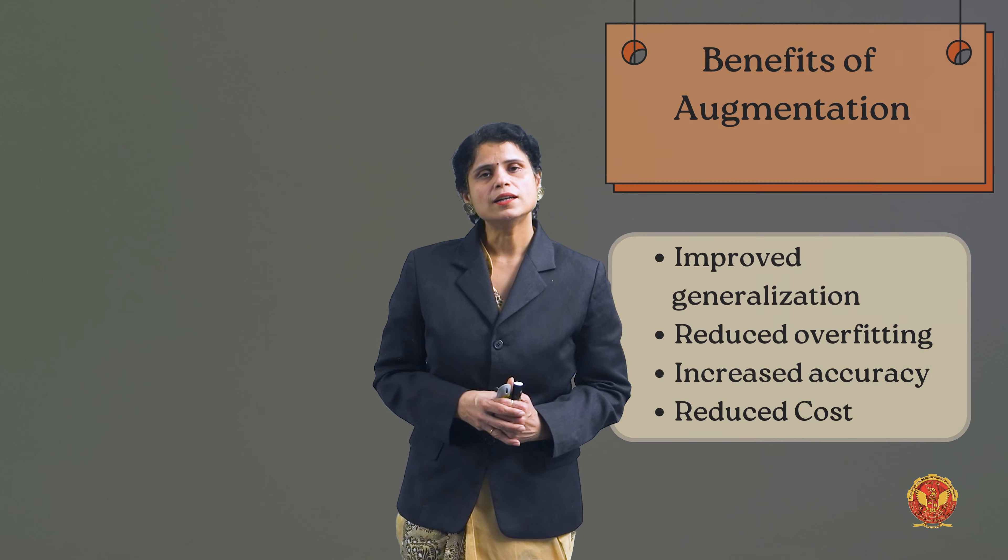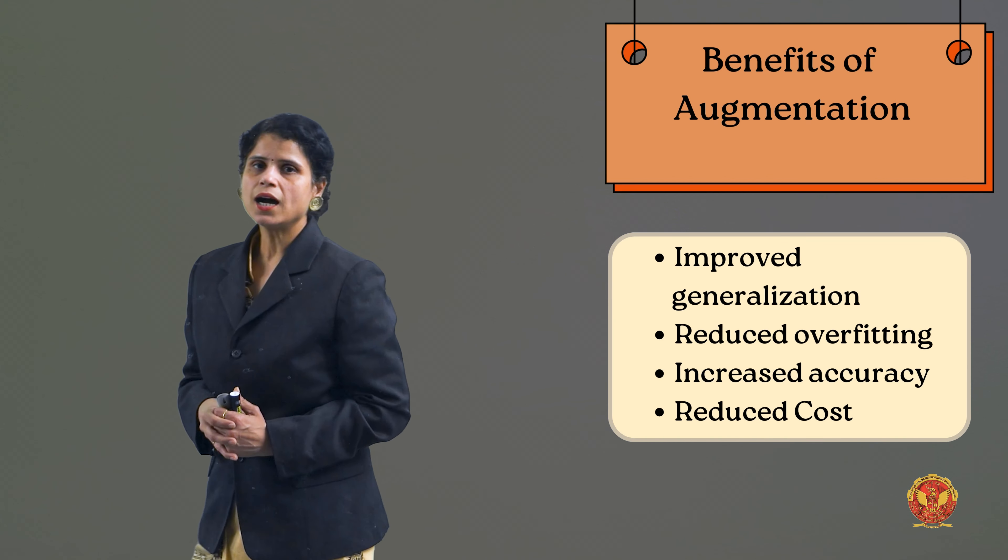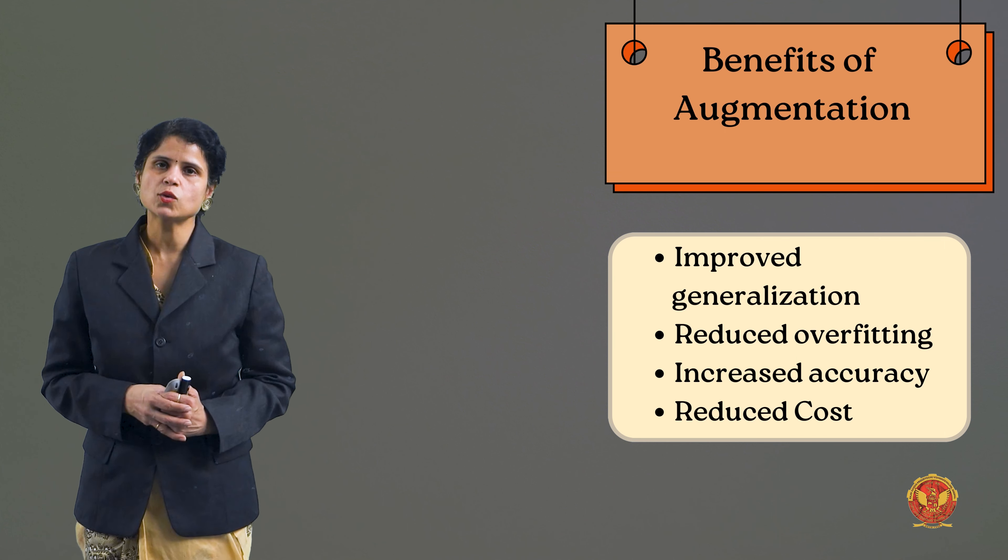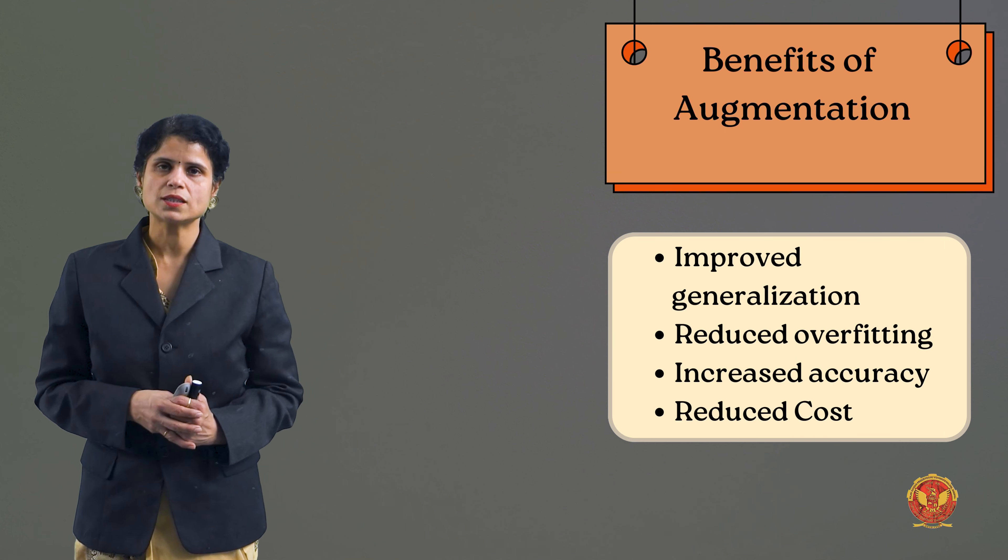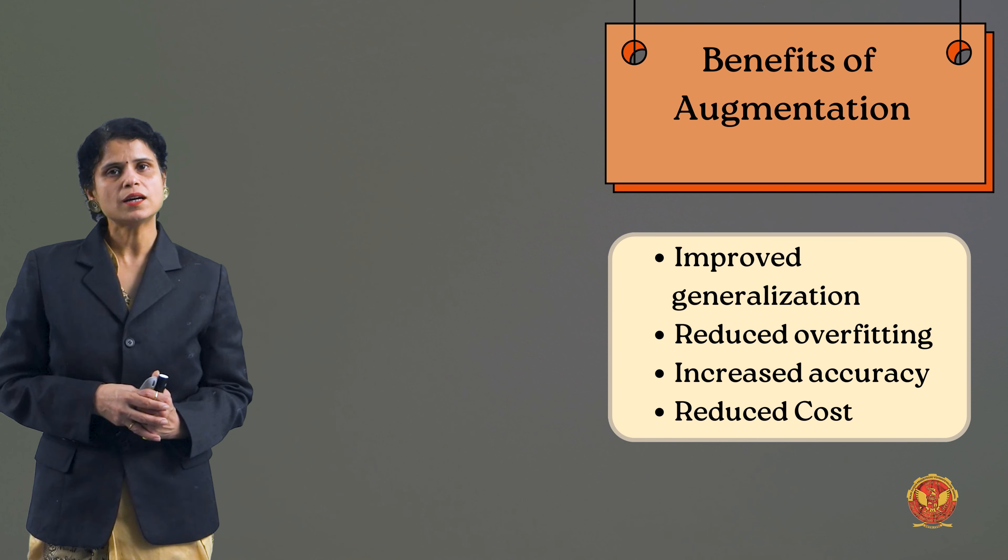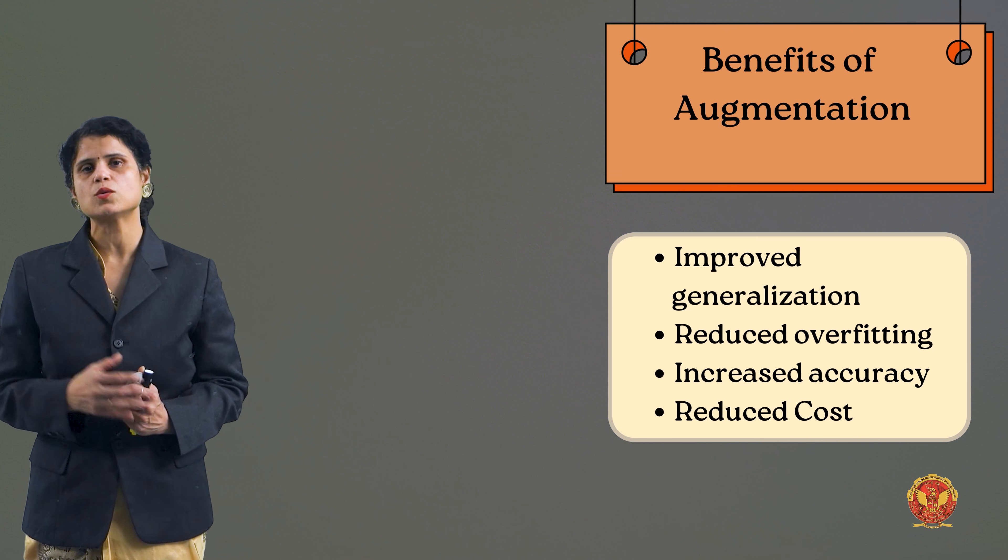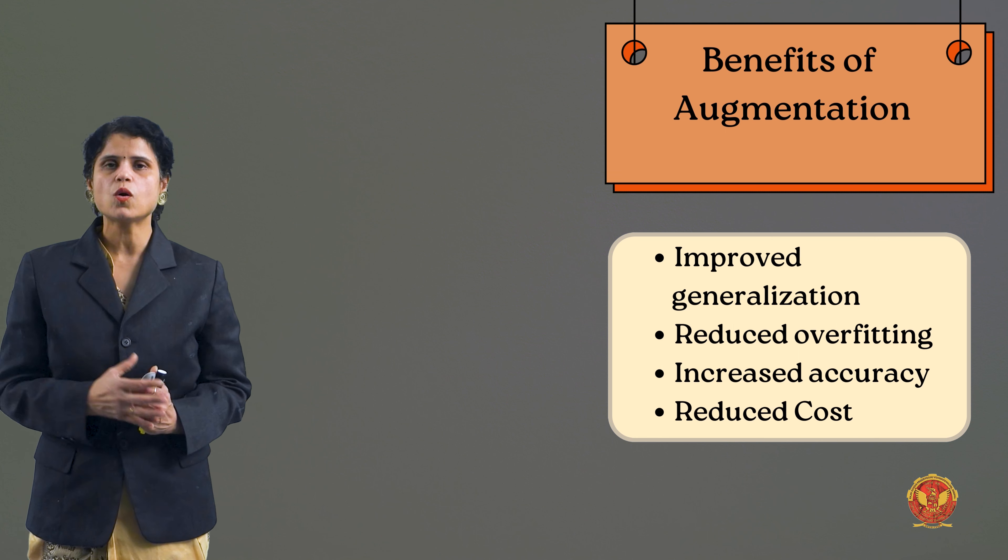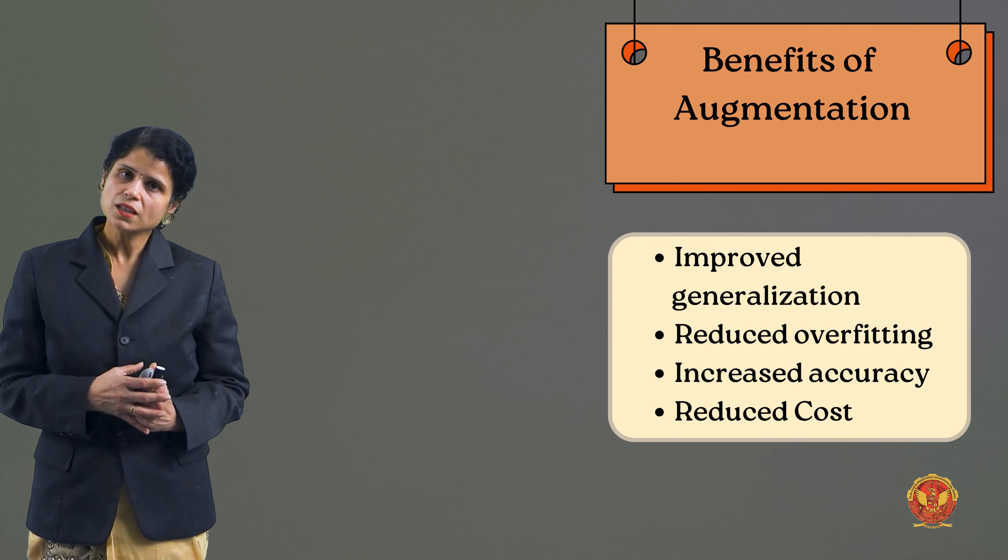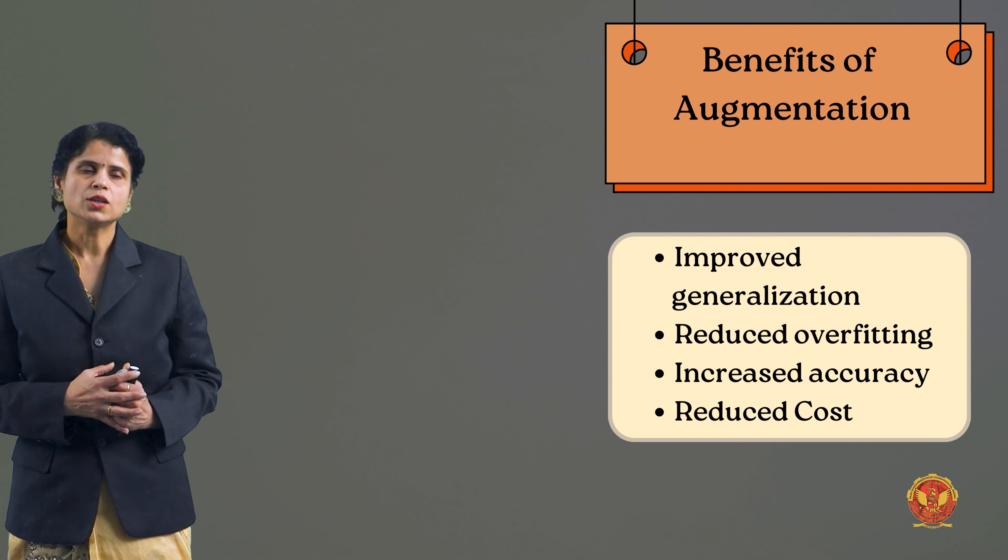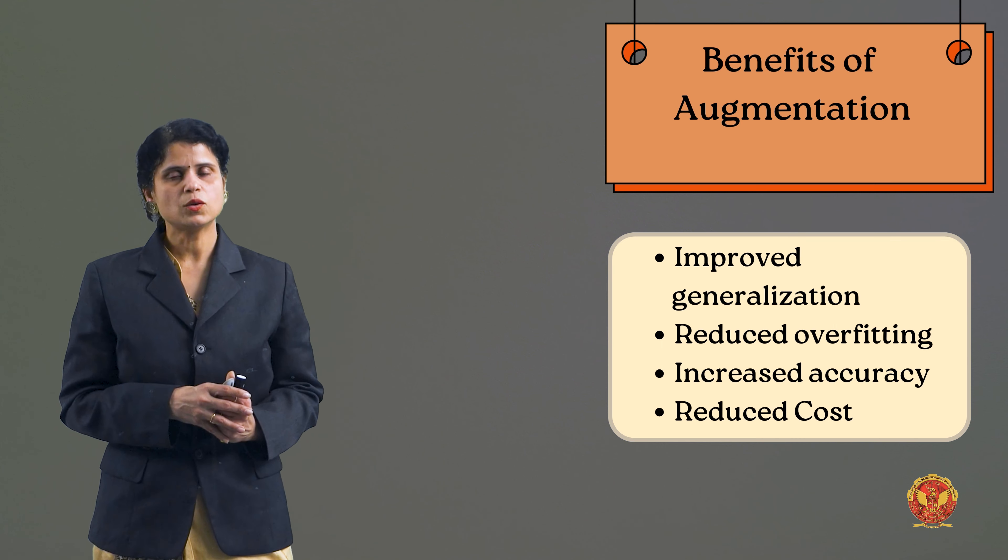Now let's move to benefits. How is this beneficial? If you have a lot of data, you have to handle it, keep it, and access it. The cost is also increased. So if you have a little bit of data and you augment the same image or data, then the cost is reduced. Data augmentation also increases accuracy because you are giving variations from one image.